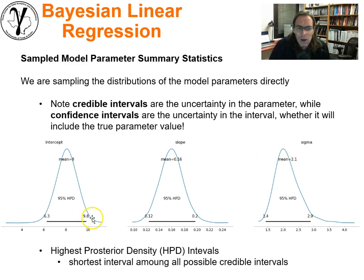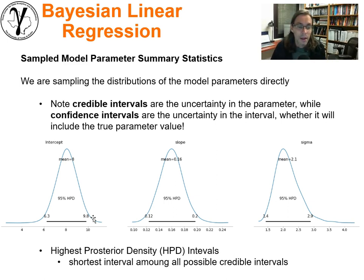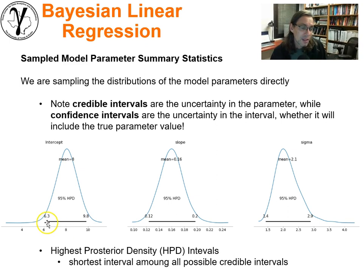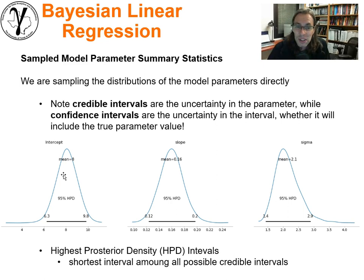When Bayesians plot a 95% credible interval, they're more specific about which interval to pick because you could shift to one direction or another. They pick the highest posterior density interval. For example, going from 6.3 to 9.8 is the interval that spans 94% and captures all of the highest density parts of the distribution.